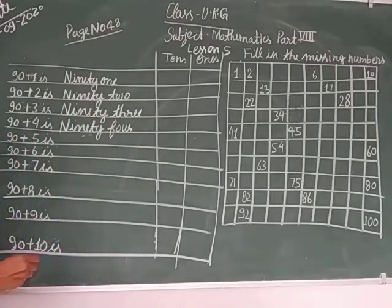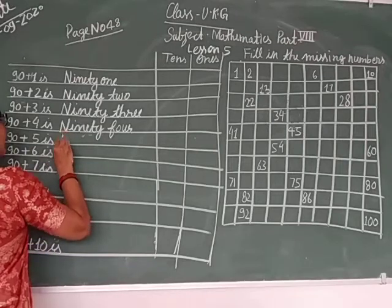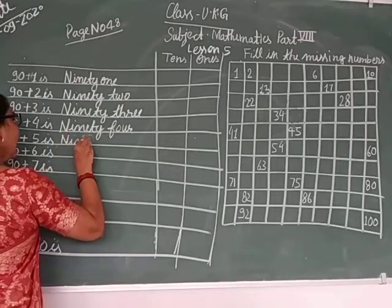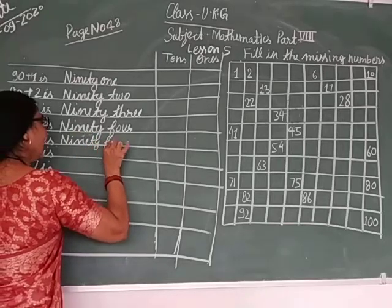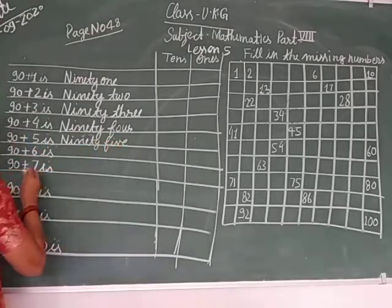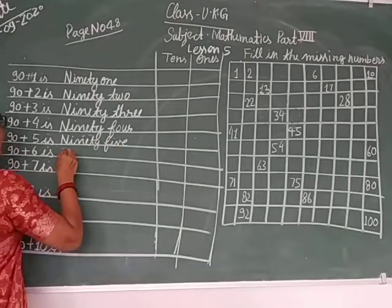90 plus 5 is 95. It's calling it as ninety, N-I-N-E-T-Y, F-I-V-E. 90 plus 6 is 96.